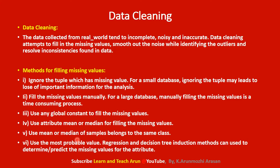The fifth method is to use the mean or median of the samples belonging to the same class. If there is one missing value, the mean or median of the same class is used. The sixth method is to use the most probable value, using regression, classification, or decision induction methods to predict or determine the missing values for the attribute.